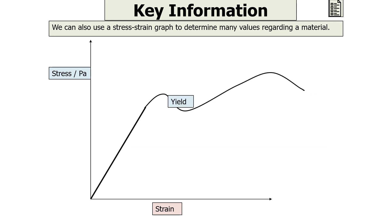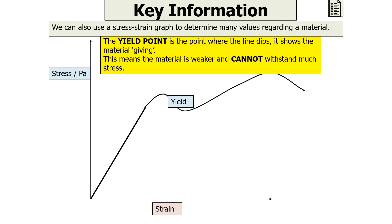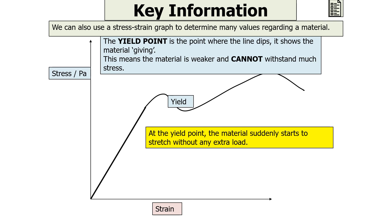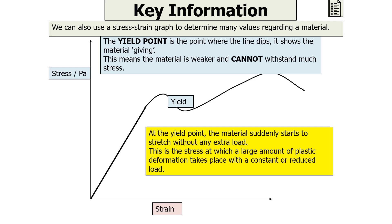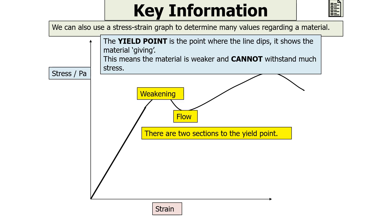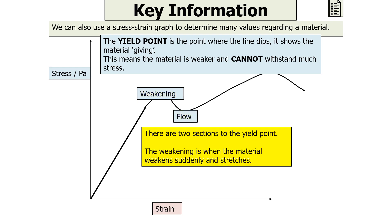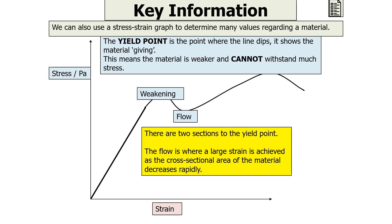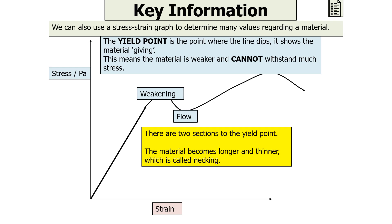The yield point is where the line dips on the graph, showing the material giving — it has become weaker and can't withstand as much stress as before. At the yield point, the material starts to strain without any extra load; this is the stress at which a large amount of plastic deformation takes place with a constant or reduced load. There are two sections: the weakening, when the material weakens and suddenly stretches, and the flow, when a large strain is achieved as the cross-sectional area decreases rapidly. This process of the material becoming longer and thinner is called necking.